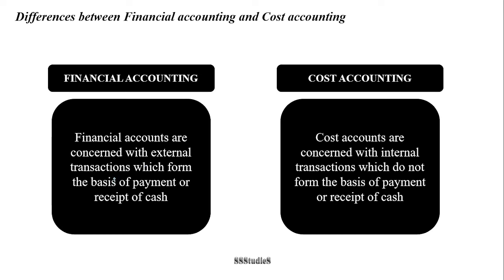Financial accounts are concerned with external transactions which form the basis of payment or receipt of cash. Financial accounting includes only those business transactions which can be monetized — wherein either a payment is made in cash or cash is received into the business. Whereas cost accounts are concerned with internal transactions which do not form the basis of payment or receipt of cash. Cost accounting is internal accounting, so there is no requirement for tracking whether cash has been paid or received by a department.